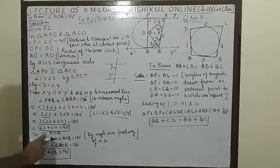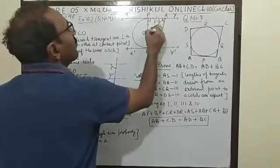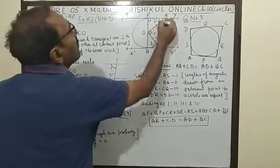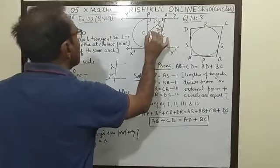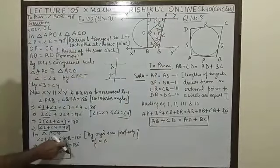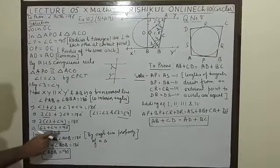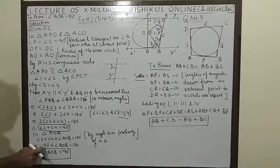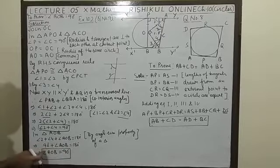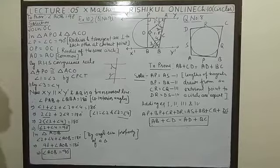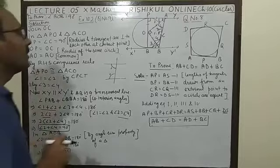Clear? Now, hint angle AOB. AOB angle 2 plus 4 plus this angle AOB equal to 180 degree by angle sum property. AOB angle 2 plus 4 plus 90 degree. You put here angle AOB equal to 180. You transfer this 90 left to right. Then AOB equal to 180 minus 90 equal to 90. Clear?